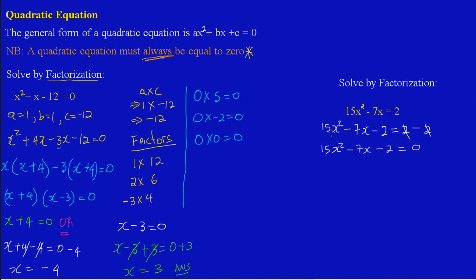Now we have this quadratic in the general form where ax² + bx + c = 0. As it relates to this equation, it's 15x² - 7x - 2 = 0.